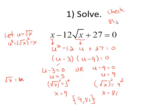If I put in 81 for x, I have 81 minus 12 times the square root of 81 plus 27, and I want to see if that does equal 0. Let's see. The square root of 81 is 9.